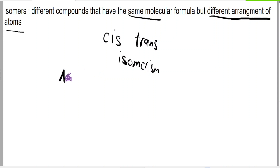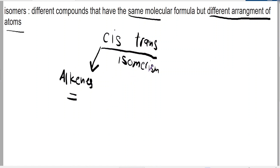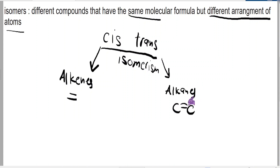Cis-trans isomerism only occurs in alkenes. Why alkenes? Because alkenes have a double bond. Alkanes have single bonds and will not show cis-trans isomerism, but two carbon atoms that have a double bond between them will show cis-trans isomerism.